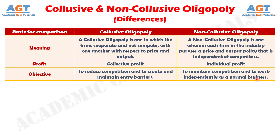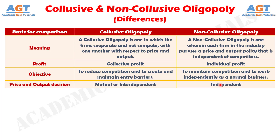Difference No. 4: The price and output decision under collusive oligopoly is mutual and interdependent, whereas, in the case of non-collusive oligopoly, the price and output decision is independent of other firms.